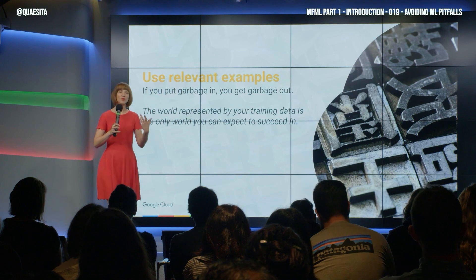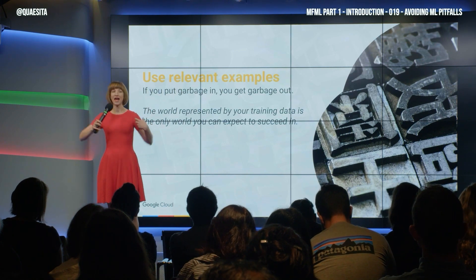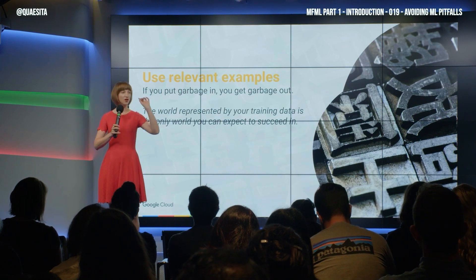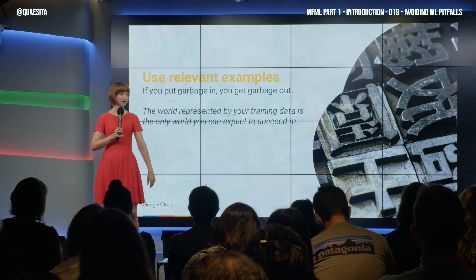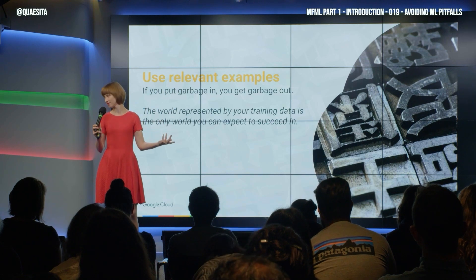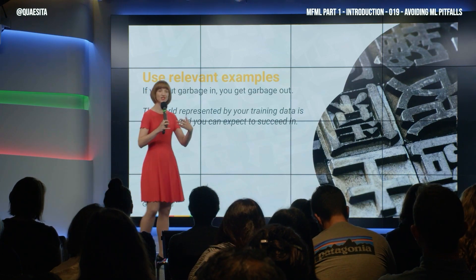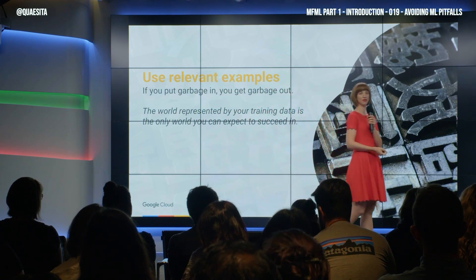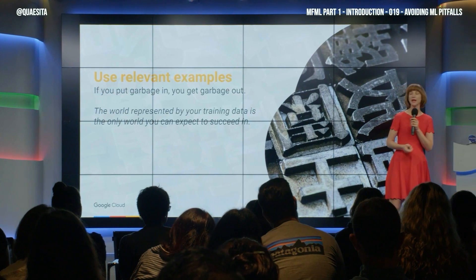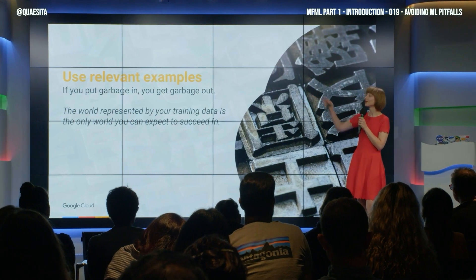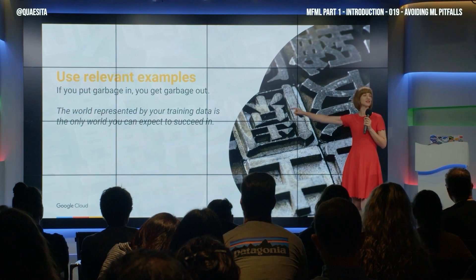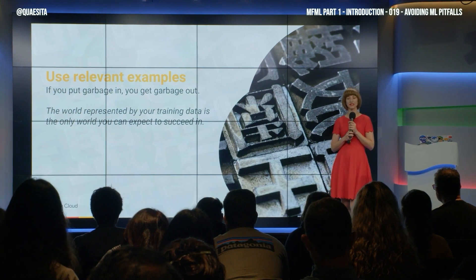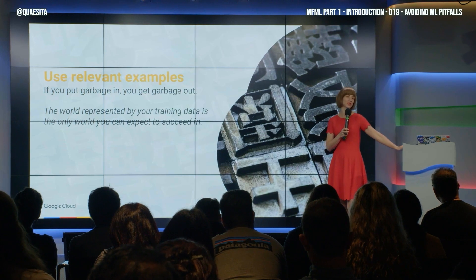We need to stop saying Data with a capital D, like just having data makes things magical somehow. And even worse, data with a capital D plus the holy water of machine learning means it just works. Data is just examples, information, and you are trying to express yourself by example. Your examples should be relevant. And so I say to Google engineers, if they're going near machine learning, they should consider tattooing this sentence on themselves: the world represented by your training data is the only world you can expect to succeed in.